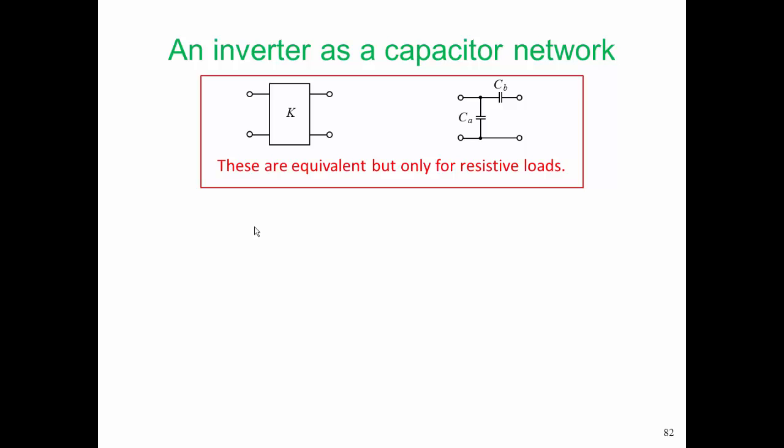In some cases, an inverter can be implemented as a capacitor network. These are equivalent, that is, the impedance inverter here and this two-port network with capacitors are equivalent only for resistive loads, so it's not a general solution. The inverters that we talked about before would work with complex impedances. In fact, they were in the middle of our filter, so those inverters really did see complex impedances.